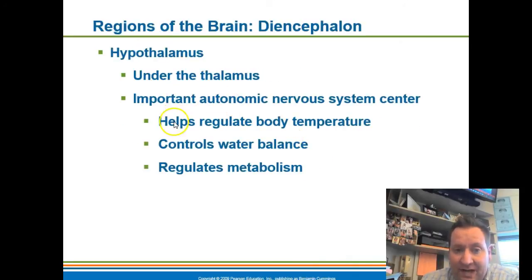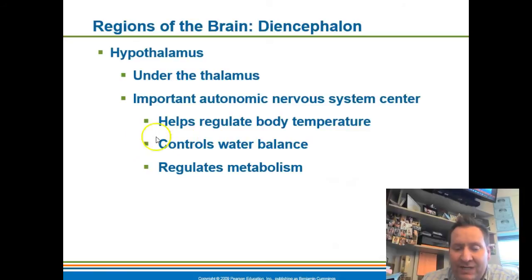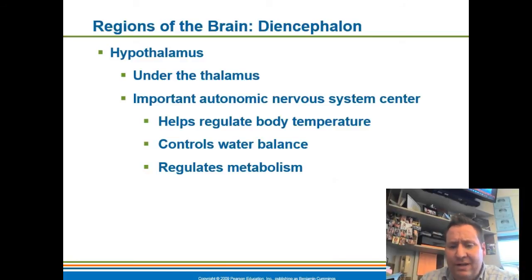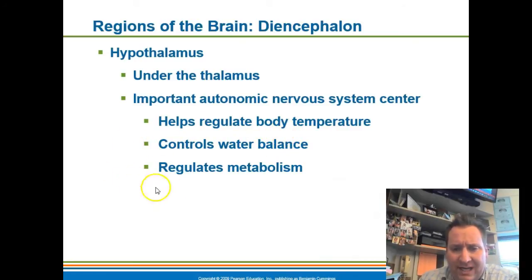The hypothalamus sits under the thalamus. It regulates your body temperature, controls your water balance, and helps regulate metabolism. One major way it does this is by producing hormones like vasopressin and thyroid releasing hormones. You don't have to know these specific hormones until we get into the endocrine system.